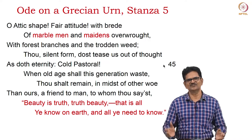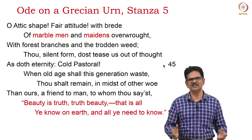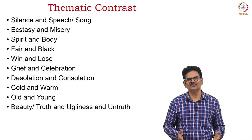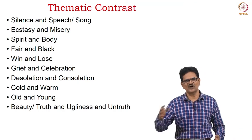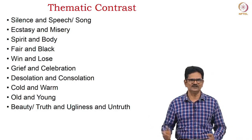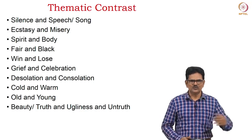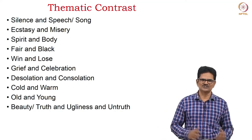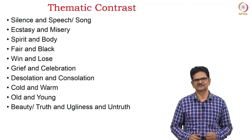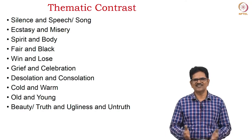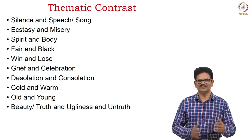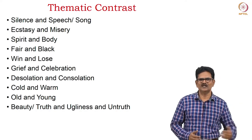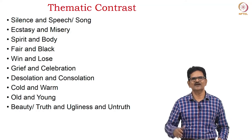This is the last stanza, and the last two lines are immortal lines — they have been a source of inspiration for poets and people alike. When we pay attention to the thematic contrasts in this poem, we identify pairs of words like silence and speech, ecstasy and misery, spirit and body, fair and ugly, win and lose, grief and celebration, desolation and consolation, cold and warm, old and young, beauty and truth, ugliness and untruth. This silent form sings a song and tells a history — that's why we have silence and speech, and from there we come to beauty and truth on the one hand, and ugliness and untruth on the other.